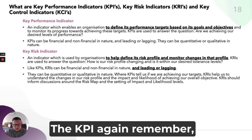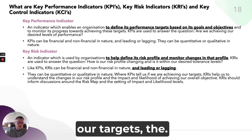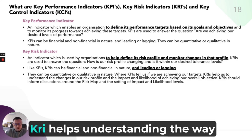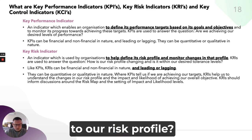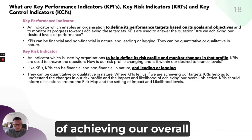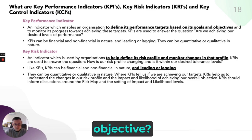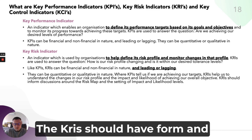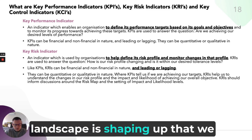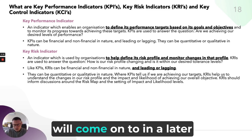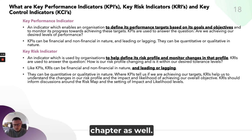The KPI tells us if we're achieving our targets. The KRI helps us understand: in the way we are going about achieving our targets, what is it doing to our risk profile? What's the impact and likelihood of achieving our overall objective? KRIs should inform discussion around risk maps and risk matrix, looking at a holistic view of how your risk landscape is shaping up — which we will come on to in a later chapter.